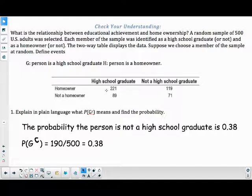So we have a Two-Way Table showing the data. We don't see totals, but we can see 221 of the 500 were a homeowner and a high school graduate.